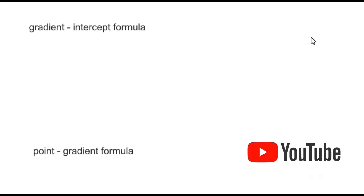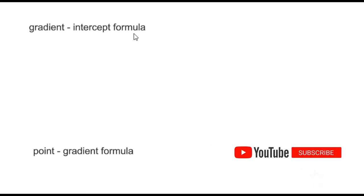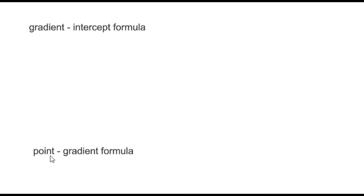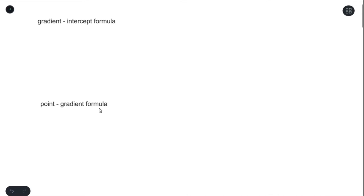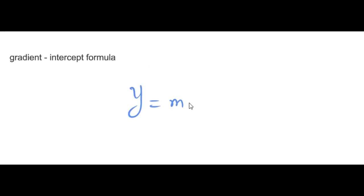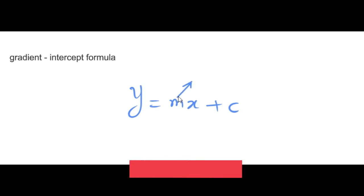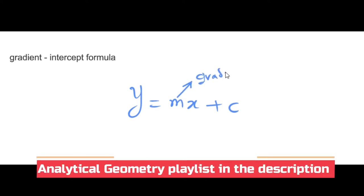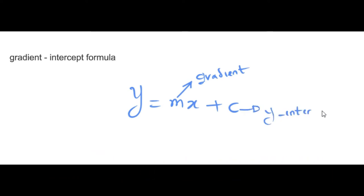The equation of a straight line can be written in two forms: the gradient-intercept form and the point-gradient form. The gradient-intercept form looks like y = mx + c, where M represents the gradient and C represents the y-intercept.